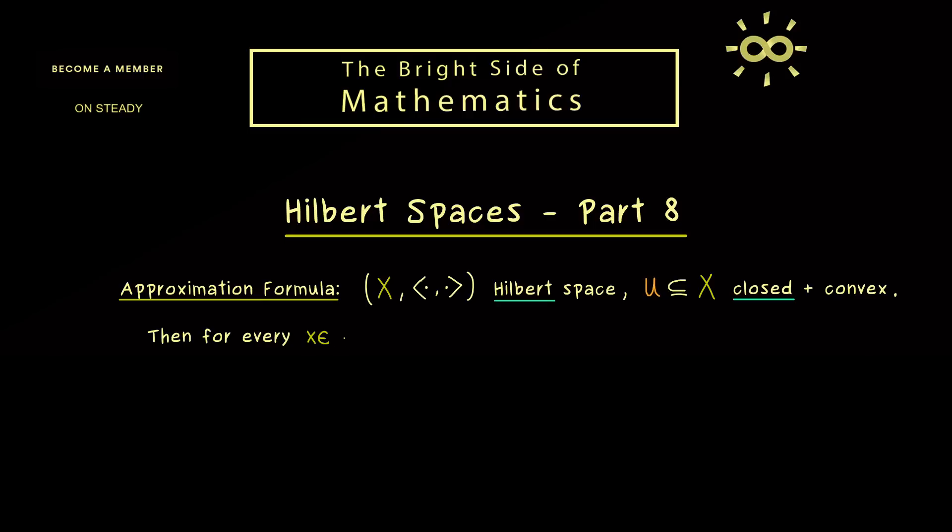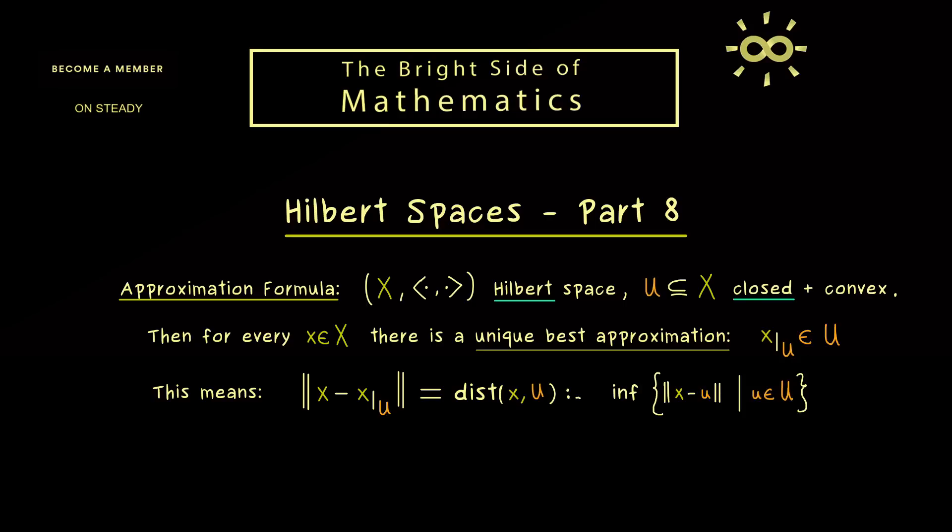And then we get that for each x in our Hilbert space X, there exists a unique best approximation inside our set U. And since it's unique, we could call it x restricted to U. And the meaning of this best approximation is just that the distance between x and U is minimized. And here please note, the distance we measure with respect to the norm, which is induced by our inner product. Hence the length of this difference vector is exactly the distance between x and U. So please recall that this distance was defined by an infimum in the real numbers. Therefore it's clear that this infimum always exists, but now the claim here is that the infimum is actually a minimum. And exactly this is what we will prove today.